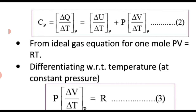But here ΔQ is not equal to ΔU. We have ΔQ = ΔU + P·ΔV. So substituting, Cp = ΔU/ΔT at constant pressure plus P·ΔV/ΔT at constant pressure.